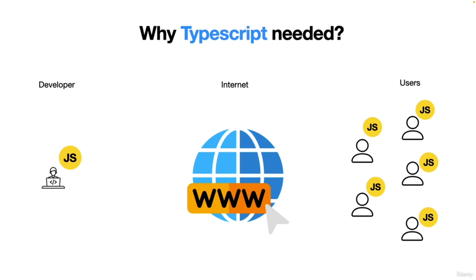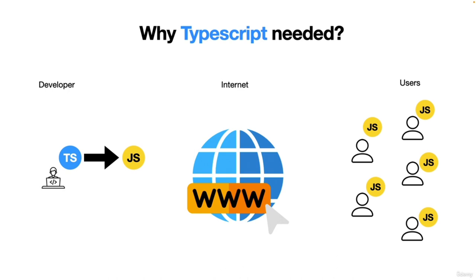This is where TypeScript plays a very good role. The developer will write code in TypeScript instead of JavaScript. When the TypeScript code is compiled, it gives output in JavaScript itself. That JavaScript can be understood by all devices over the internet. This way, we solve the problem from the developer side without affecting users or their devices. TypeScript helps developers write bigger, more complex code in a much simpler fashion.